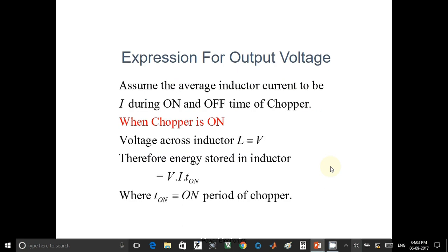Expression for output voltage. Assume the average inductor current to be I during on and off time of the chopper. When chopper is ON, voltage across inductor L is equal to V. Therefore, energy stored in inductor is equal to V into I into T on, where T on is equal to on period of chopper.